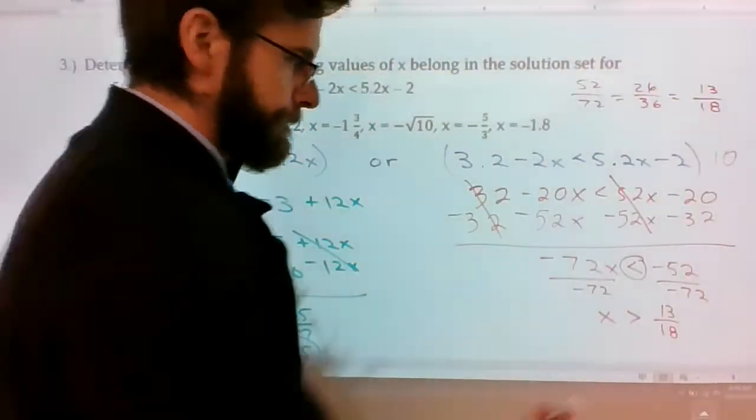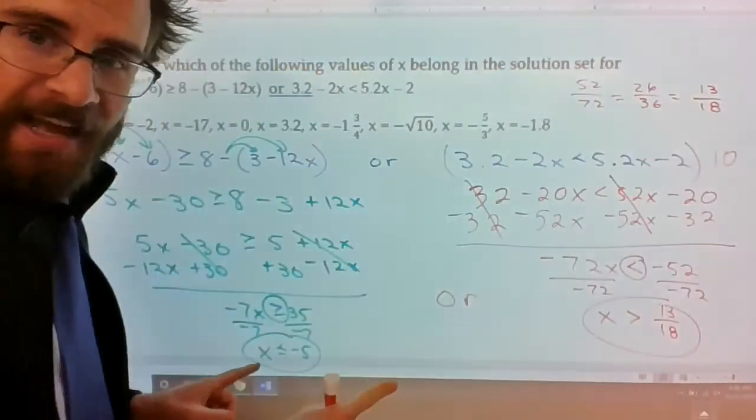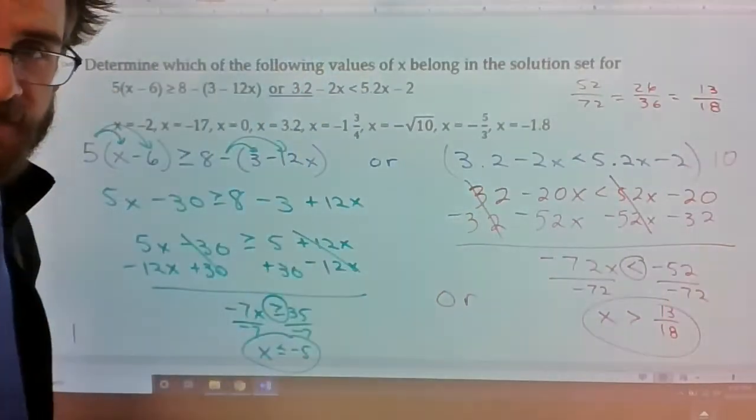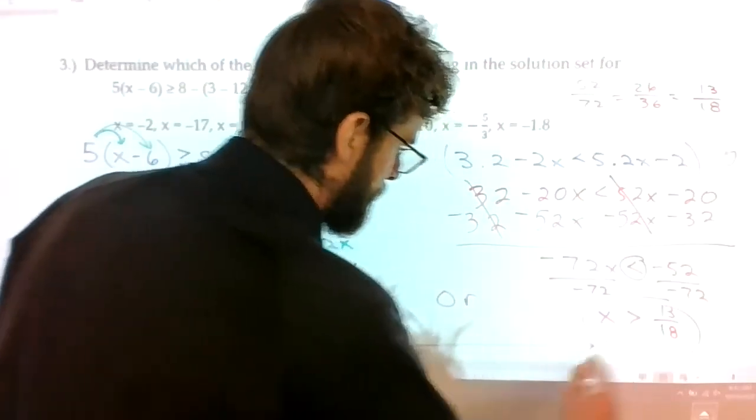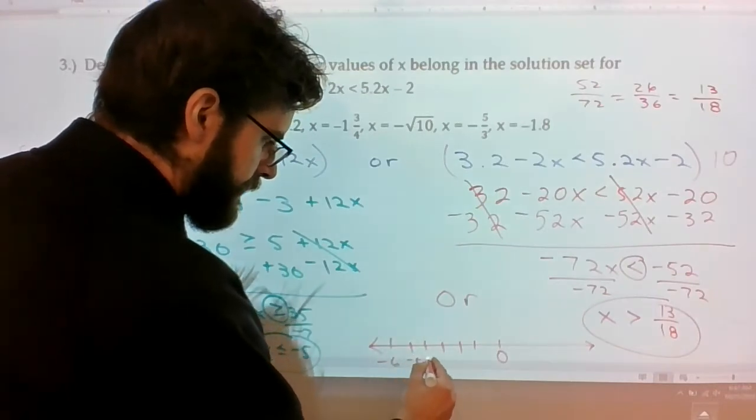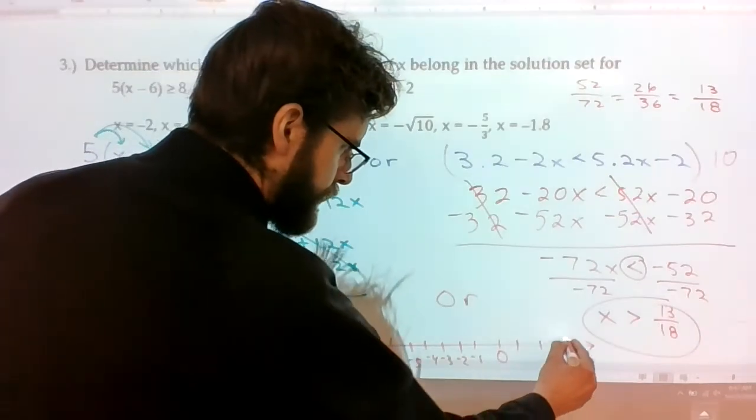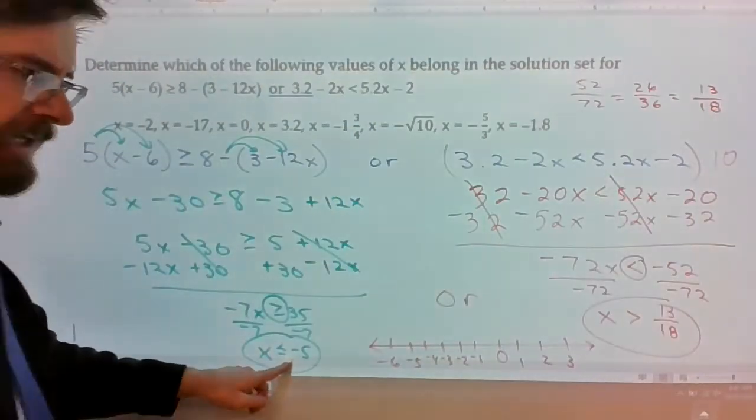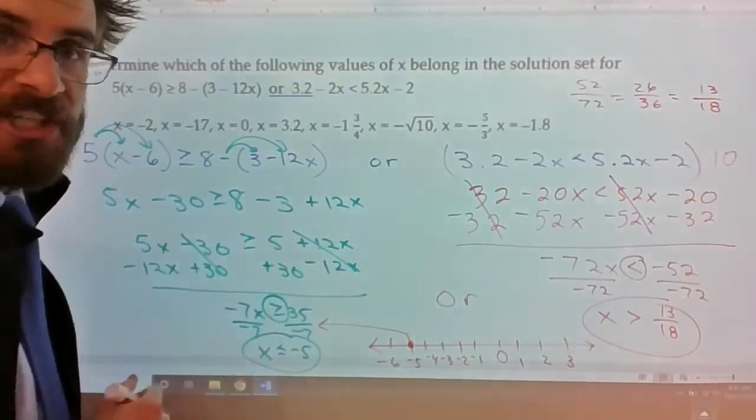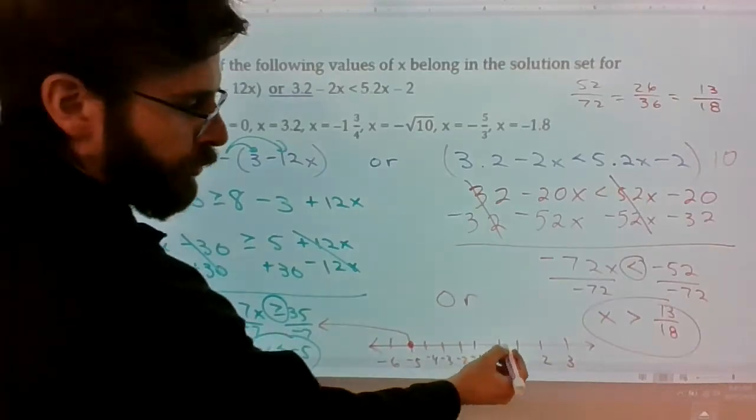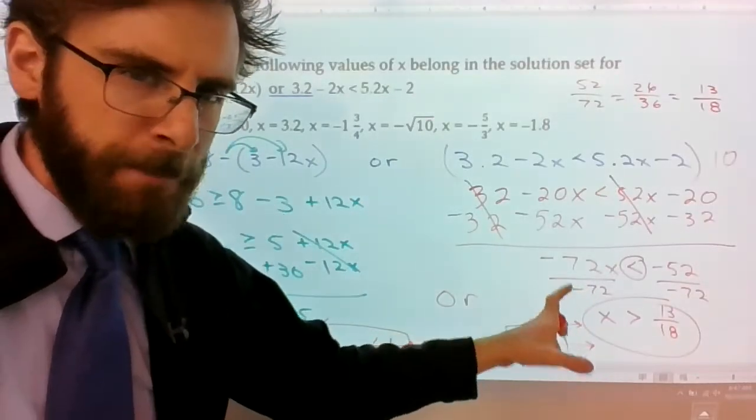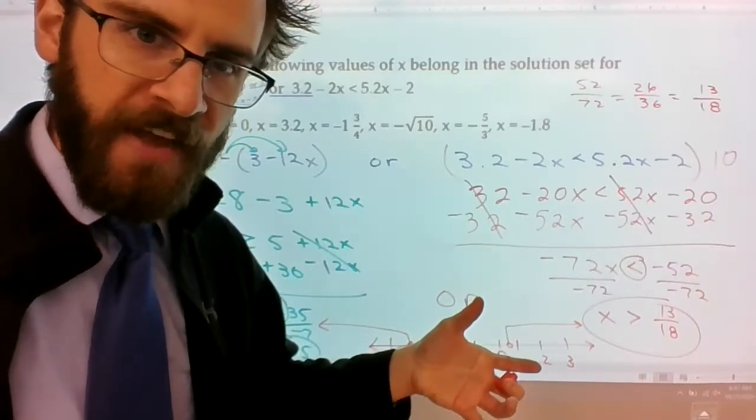Alright, so you got two options here. You can graph this now, or you can just ask yourself, does negative 2 fit in either of these solution sets? So here's what the graph looks like. Negative 1, 2, 3, 4, 5, 6. 1, 2, 3. Now this one is pretty clear. You put a close circle at negative 5, and then it's less than. So all the solutions to the left of that are legit. In addition, all the solutions that are greater than 13 over 18, which 12 over 18 is 0.6 repeating, 2 thirds. So we have kind of an idea of what that number is, but not exactly.